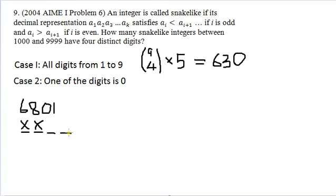And similarly, 0 can't be in the last digit, because we would have increased from the third to the fourth digit. So we know that in Case 2, the 0 must live right over here.